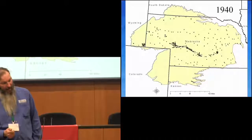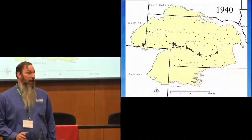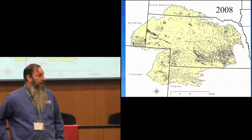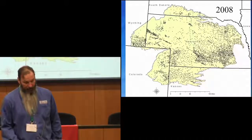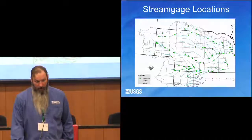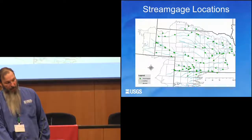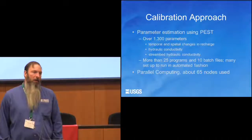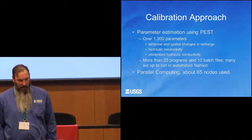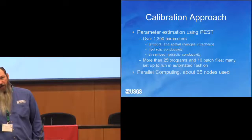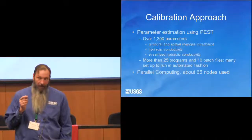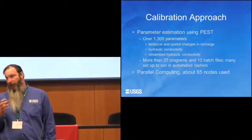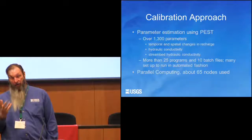On a map, in 1940 you have measurements primarily near the Platte River and some spread across Nebraska, with very little in other areas. By 2008, there is much more complete and extensive coverage. The calibration approach uses parameter estimation through the PEST suite of software with over 1,300 parameters relating to temporal and spatial changes in recharge, hydraulic conductivity of the aquifer system, and hydraulic conductivity of stream beds. We use about 25 programs of 10 batch files set up to run in an automated fashion.